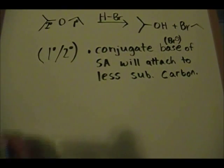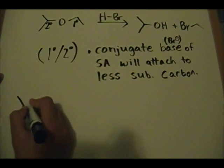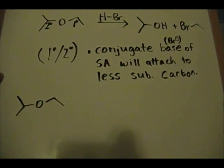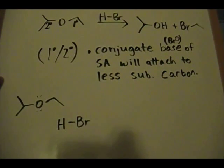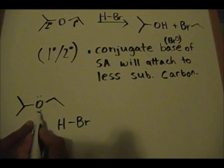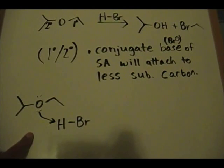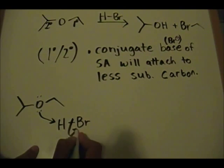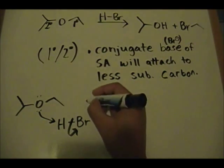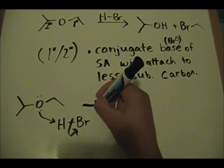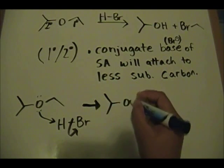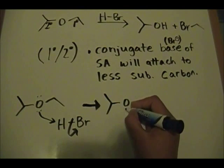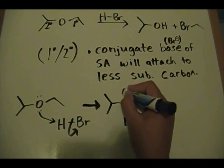This is the ether we're starting off with — it has two lone pairs on the oxygen — and you're reacting with HBr. A bond forms between the oxygen and the hydrogen, and then you kick off the pair of electrons onto the bromine. The product of this step is the ether now having an H attached to it, bearing a positive charge on the oxygen.